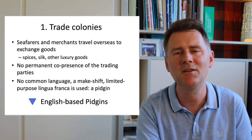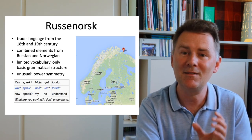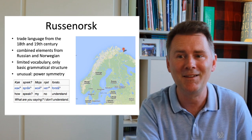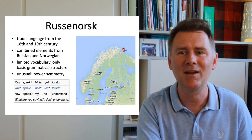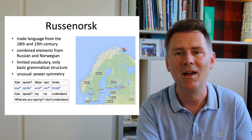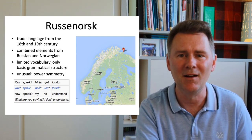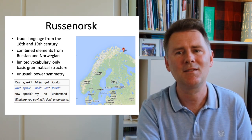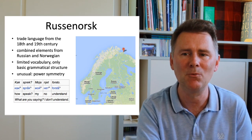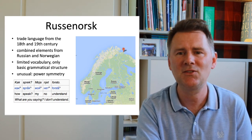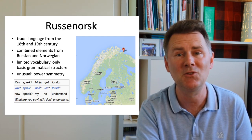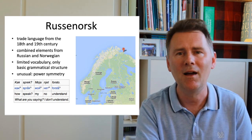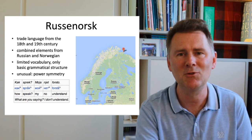One slightly unusual but interesting example is Russenorsk, a trade language that combines elements of Russian and Norwegian, spoken in the 18th and 19th century but no longer spoken today. What's unusual is the power symmetry between the two languages — more typically, colonial situations are characterized by clear power asymmetries, but here Russian and Norwegian sailors simply met, exchanged goods, and created this language in the process.